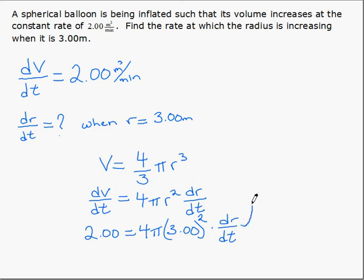So if we just come up here to finish, we rearrange all the pieces so that we get dr/dt. dr/dt is going to equal, well, we have the 2 on the left, so we keep the 2, and we're going to divide that by everything on the right. So 4 pi and 3 squared is 9, so we'll write that as 9.00.